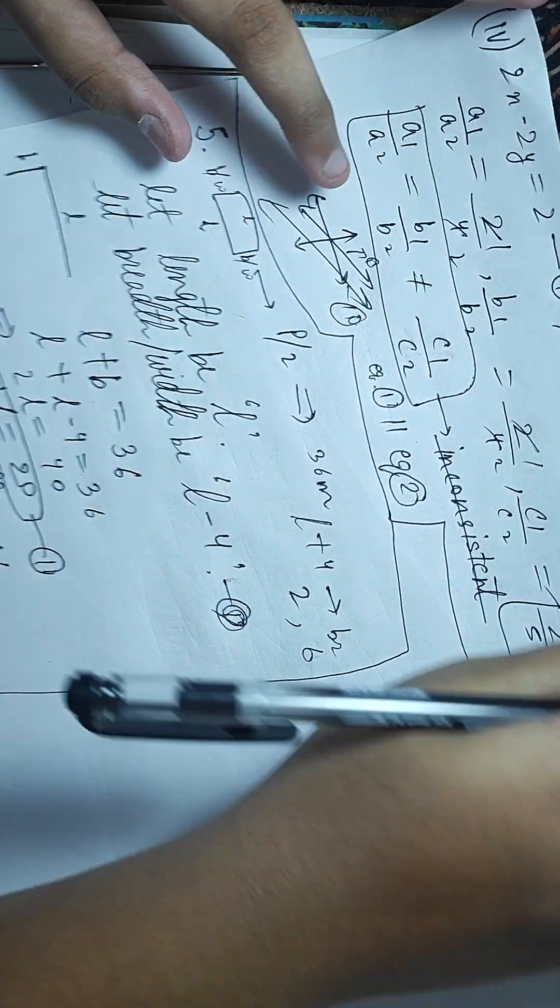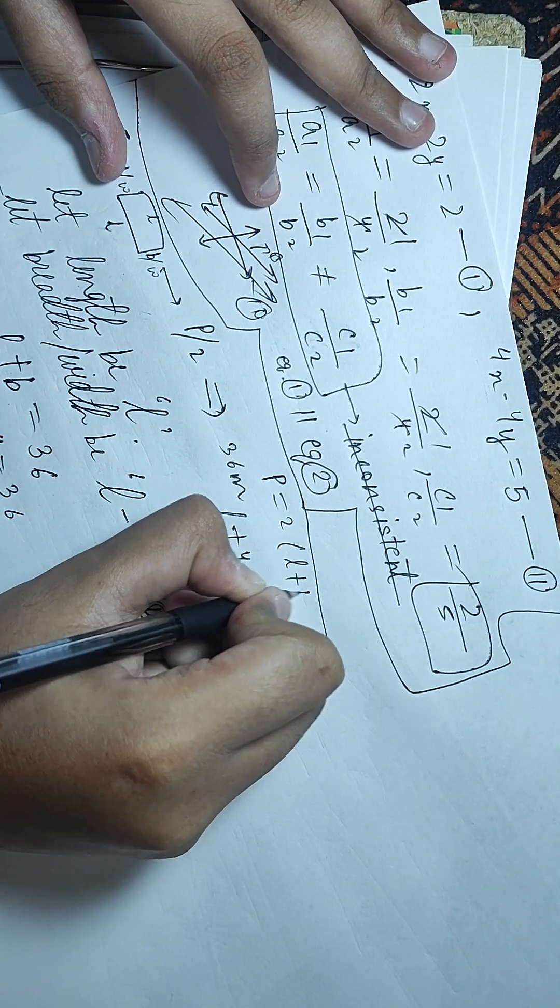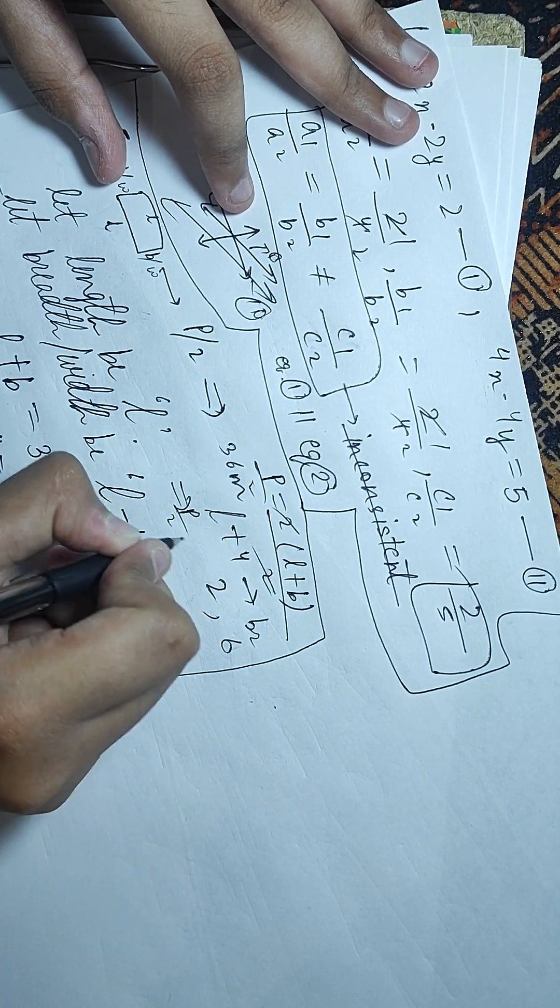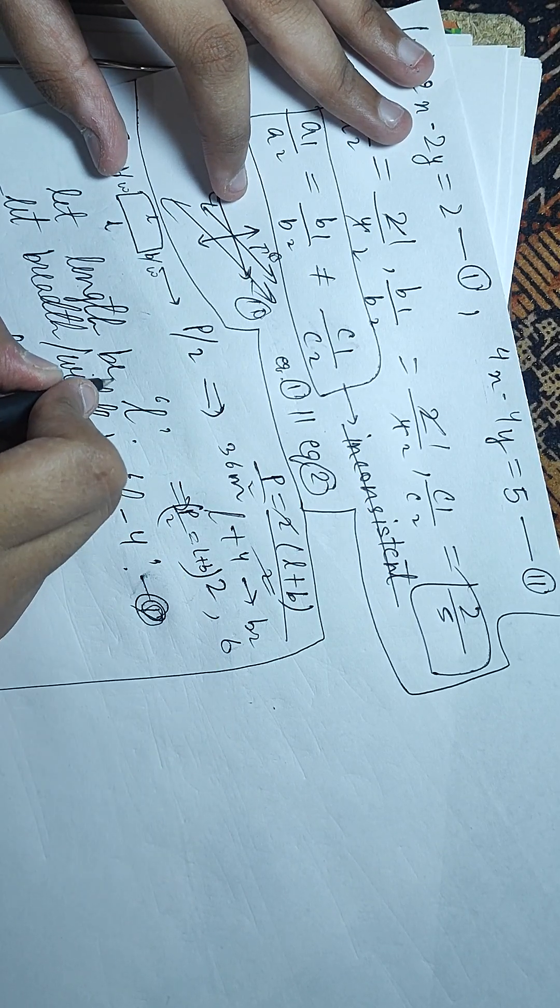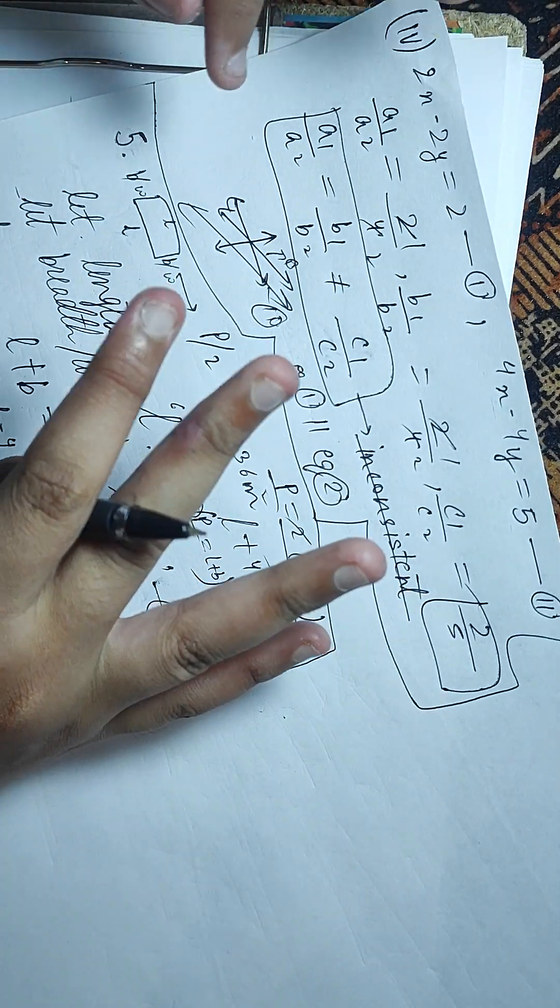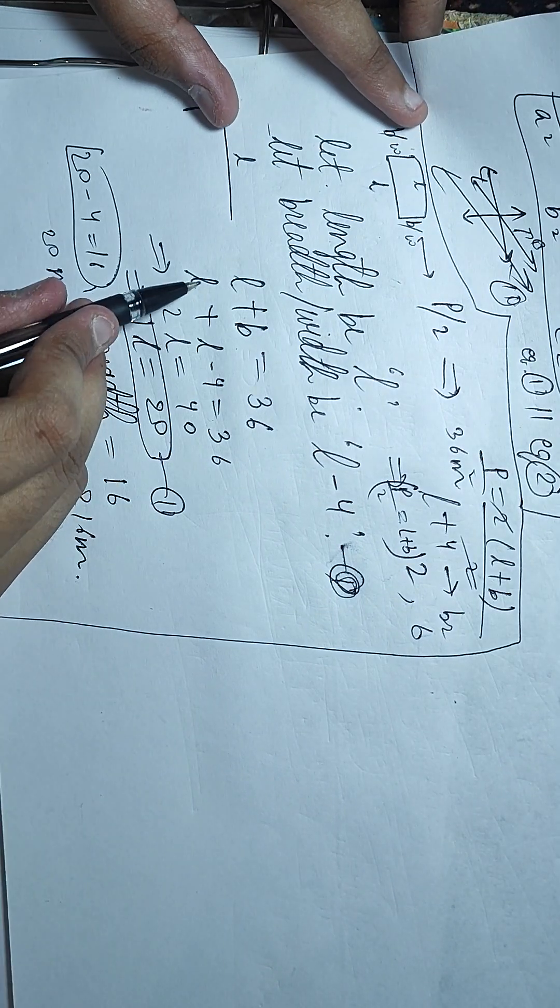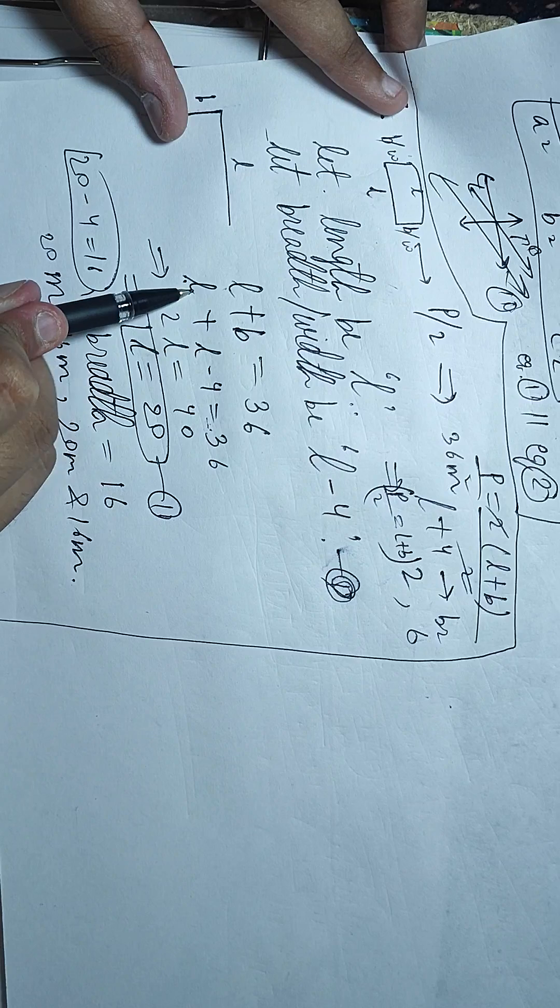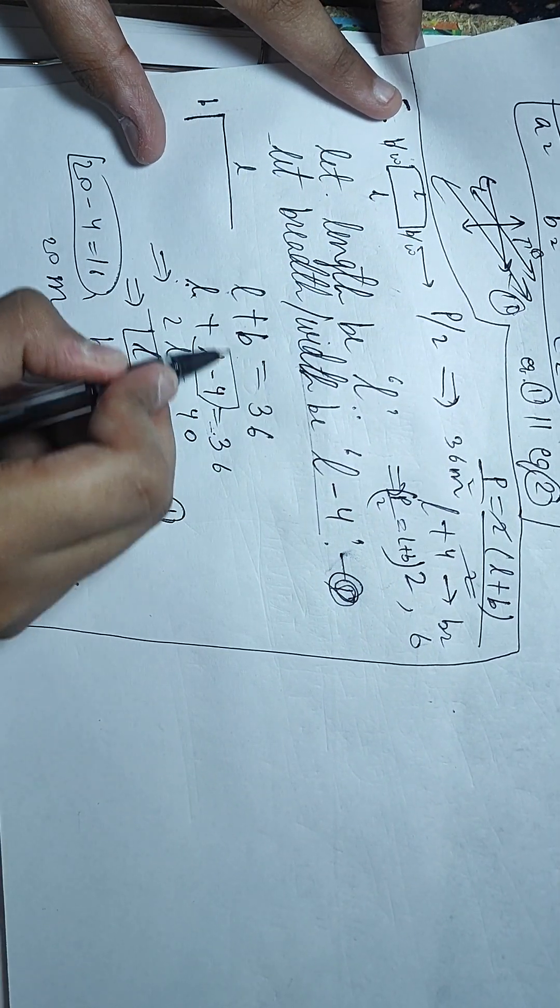The perimeter is P equals 2 into L plus B. Now P by 2 equals L plus B. P by 2 equals 36. So L plus B where length is L and breadth is L minus 4, we have L plus L minus 4 equals 36.